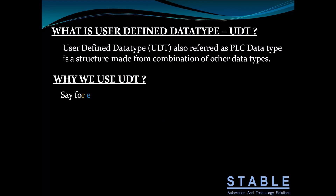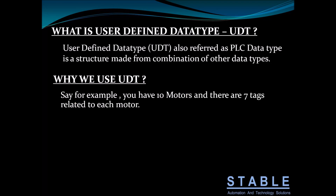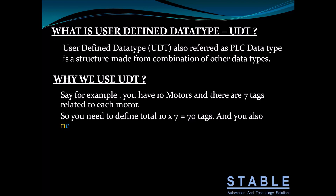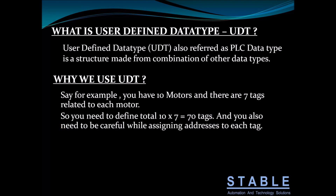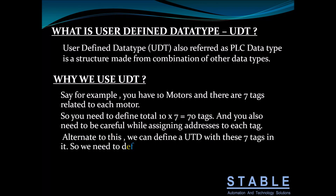Why do we use it? Say for example you have 10 different models and each model has seven tags related to it. So you need to define a total of 70 tags and also be careful assigning an address to each tag. As an alternative, we can define a UDD with those seven tags in it, so we need to define only one tag for each model — that is a total of 10 tags only.